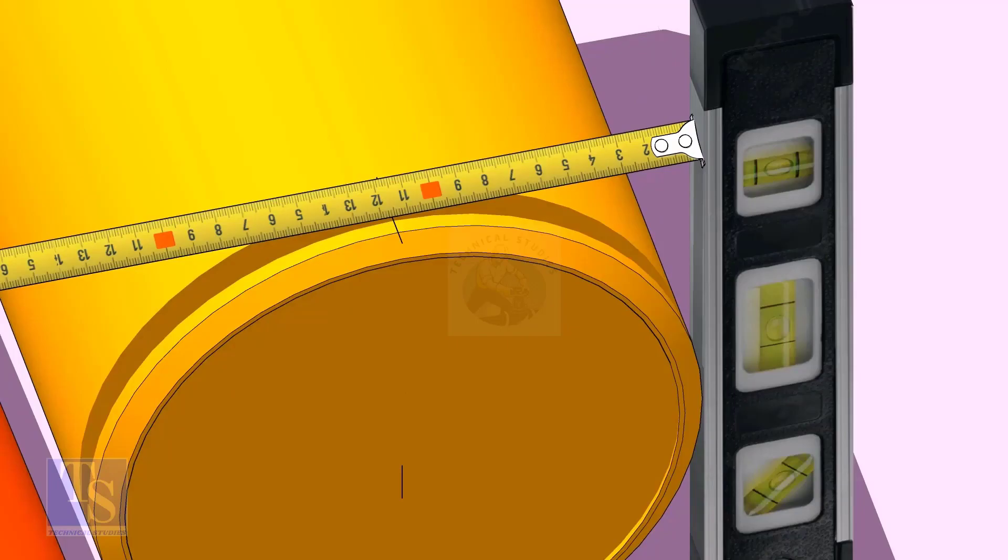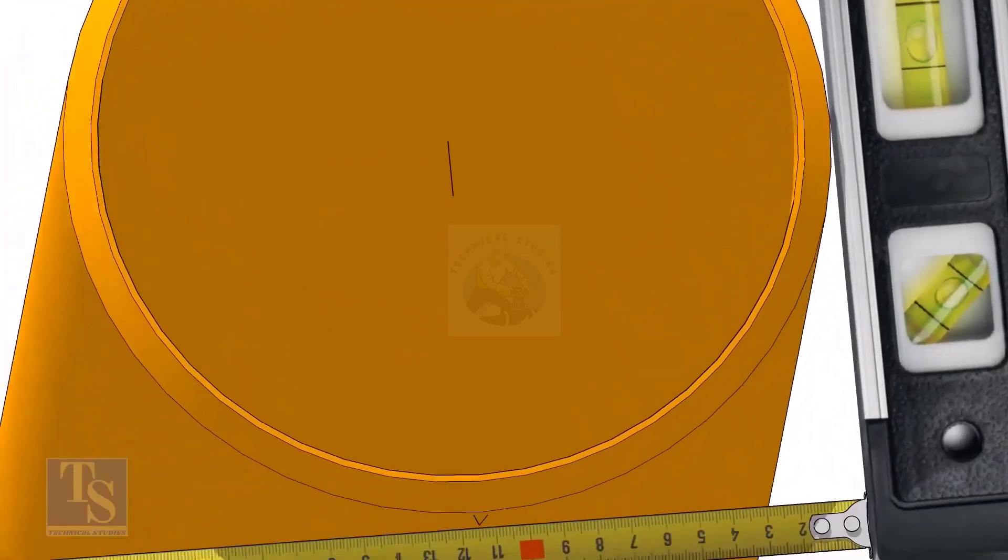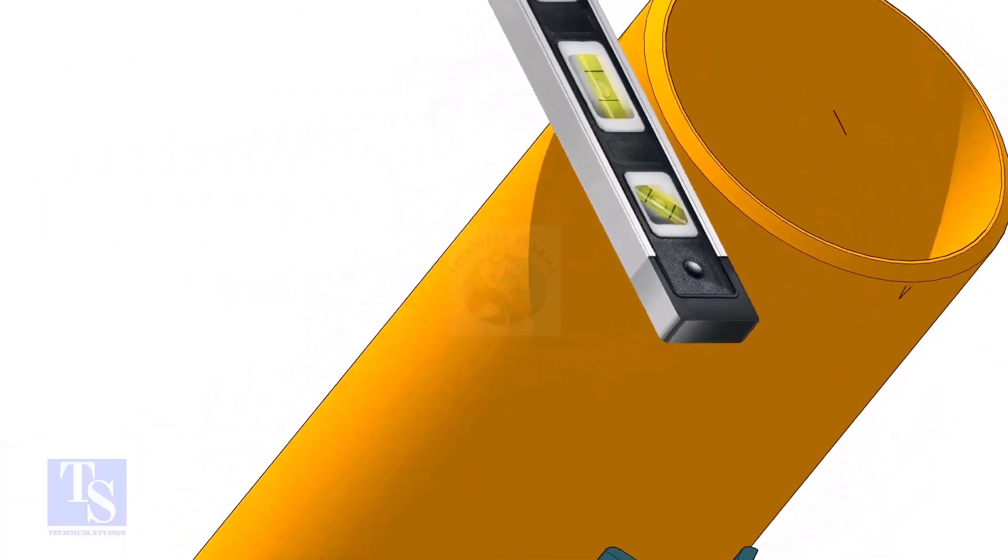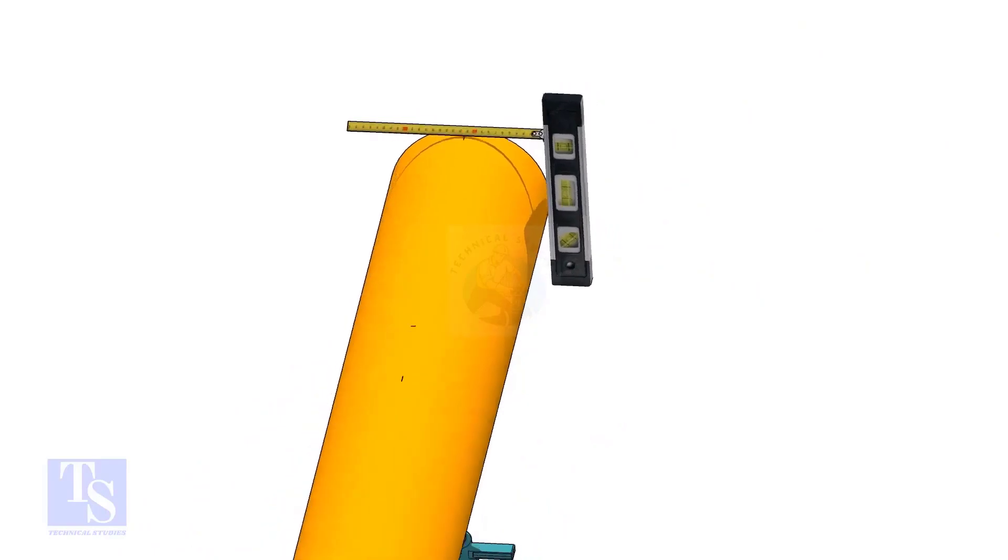Hold a level bottle firmly and vertical at the side of the pipe as shown. Mark half OD at the top and the bottom side of the pipe. Cross check the dimension from the opposite side to ensure the marking is correct.